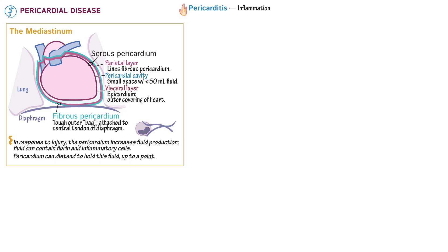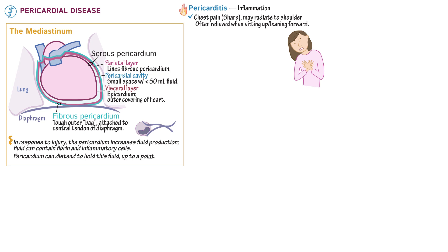We'll start with pericarditis because it's the most common pericardial disease and because it can lead to other diseases. Pericarditis is inflammation of the pericardium. Signs and symptoms include sharp chest pain, which may radiate to the shoulder. The pain is often relieved upon sitting or leaning forward. During auscultation, a pericardial friction rub can often be heard, characterized as a squeaking or scratching sound.